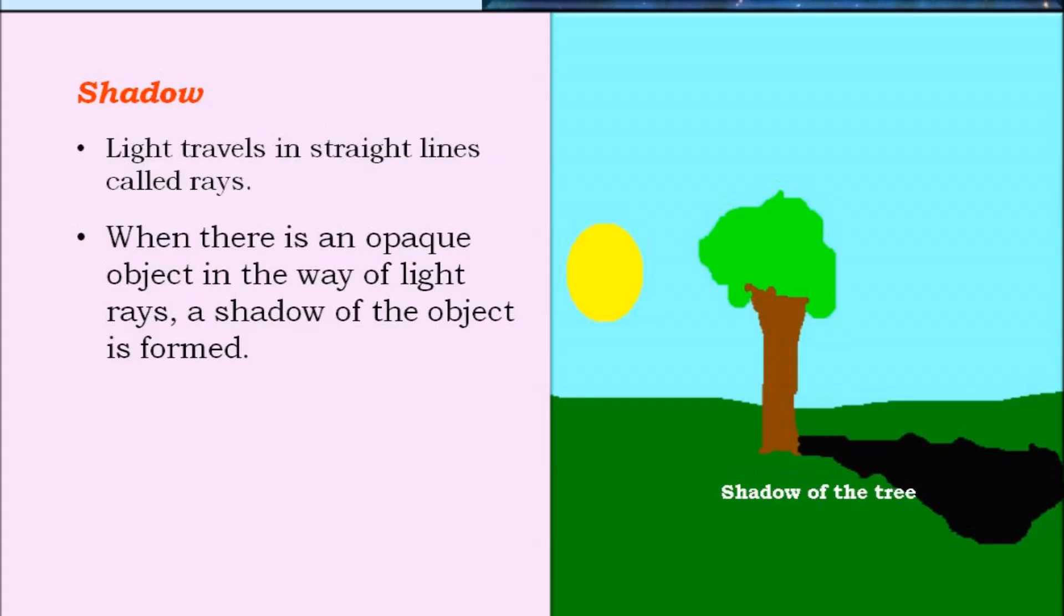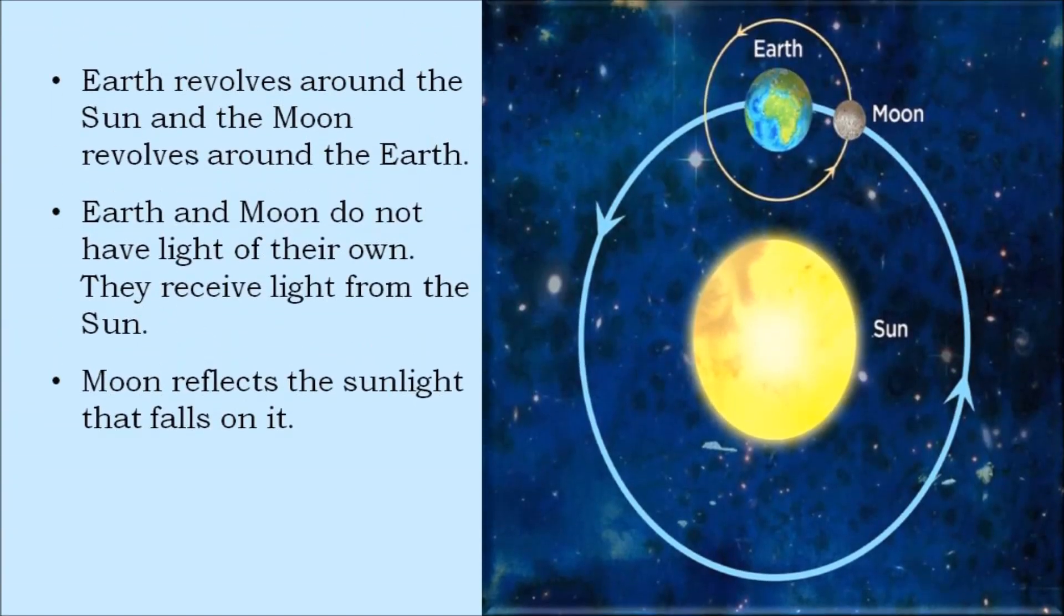In our solar system, the earth revolves around the sun and the moon revolves around the earth. Earth and moon do not have light of their own and they receive light from the sun. Moon reflects the sunlight that falls on it.